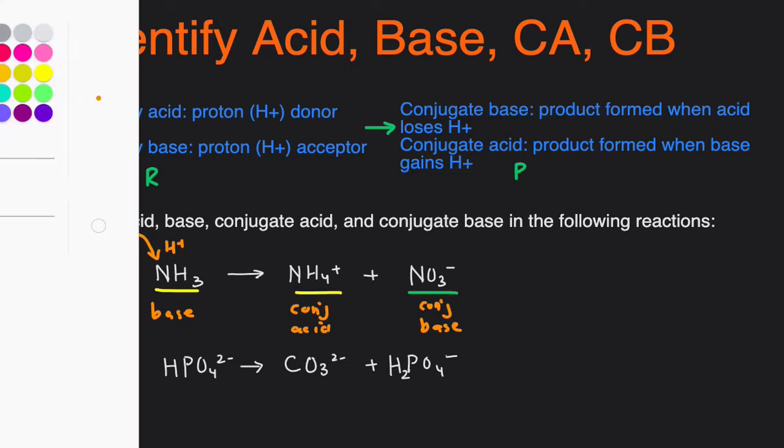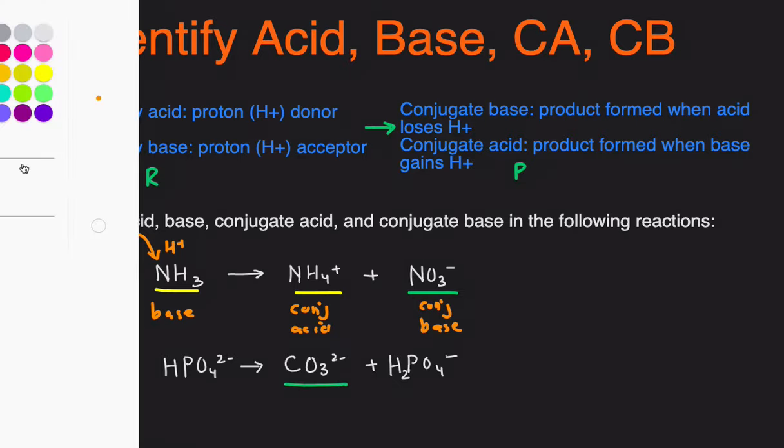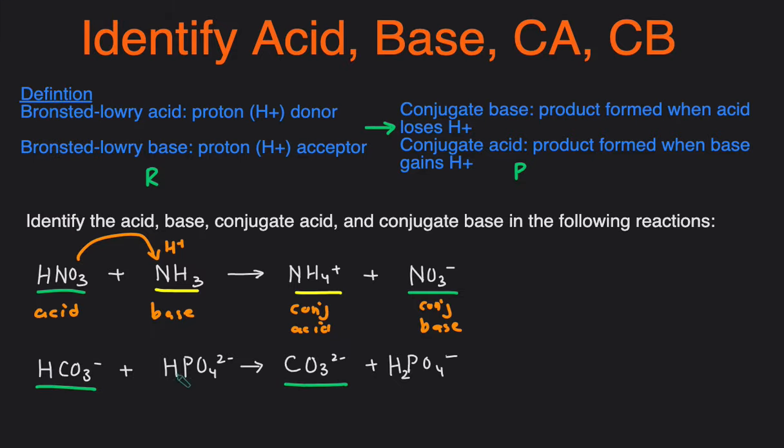So first step again, this is to pair it up. HCO3- is most similar to CO3^2-, and then HPO4^2- is most similar to H2PO4-. This one is not as obvious because both the reactants contain an H, so we have to compare to the products to determine what's gaining the H and what's losing the H. You can see that the HCO3- is the one that's losing H because later it becomes CO3^2-, you see it's missing an H.